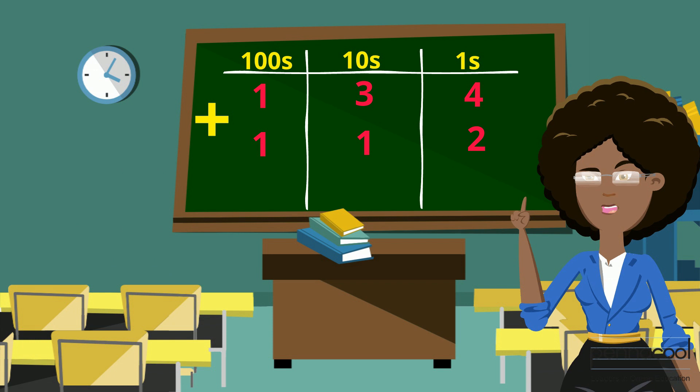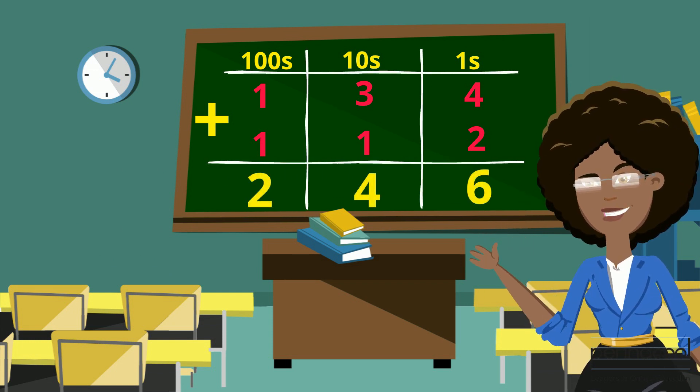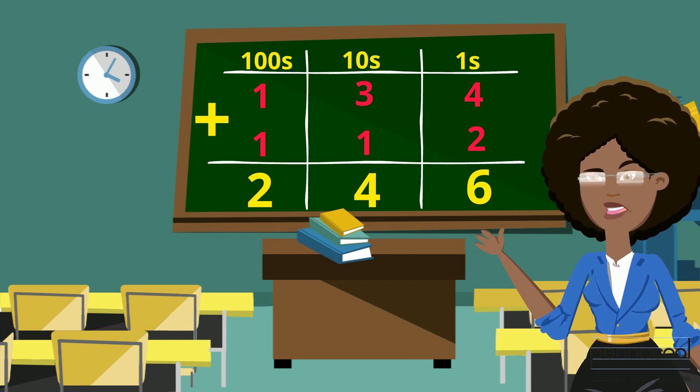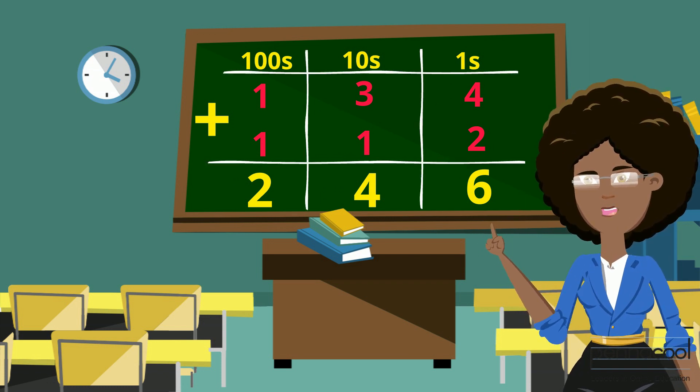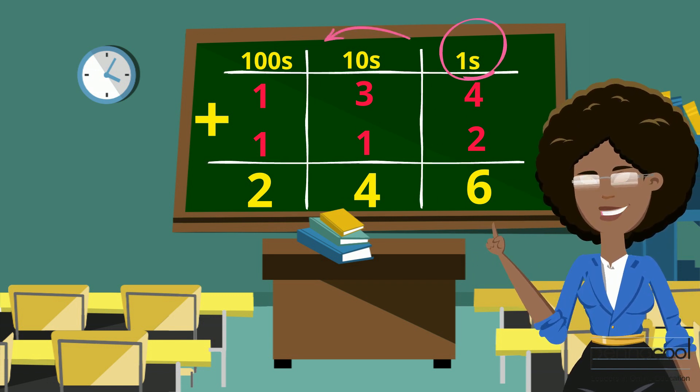When this is done, you add your ones column first, followed by your tens column, then your hundreds column until you get to the largest number. We always start with adding our smallest values, meaning the values in our ones column, and work our way up, which means to the left in the higher columns.